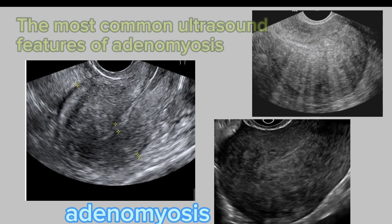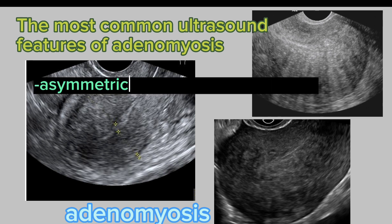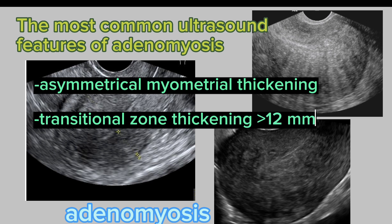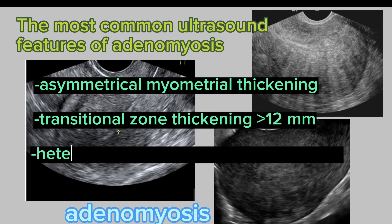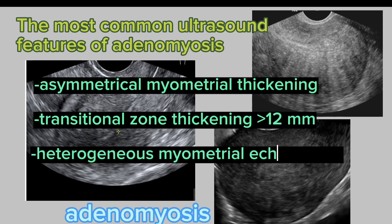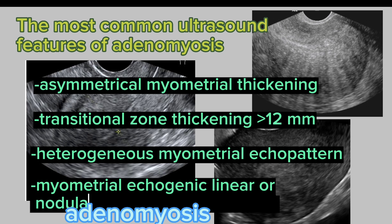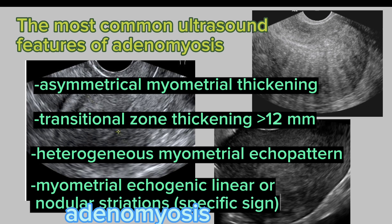The most common ultrasound features of adenomyosis are asymmetrical myometrial thickening, transitional zone thickening more than 12 mm, heterogeneous myometrial echo pattern, and myometrial echogenic linear or nodular striations, which is a specific sign.